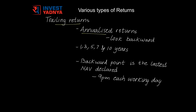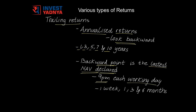So how do you track the performance of your mutual fund? There are two types of returns which will help you do that. Trailing returns are annualized returns that look backward for a specified duration. This duration, as seen on various websites, is 1, 3, 5, 7 and 10 years. This backward point from which trailing returns are calculated is the latest NAV available. NAVs are declared at 9pm on every working day. On various investment websites and fund fact sheets, you could also see trailing returns calculated for 1 week and 1, 3 and 6 months as well.